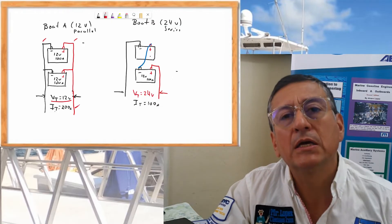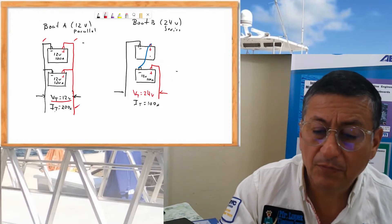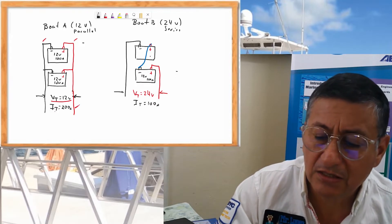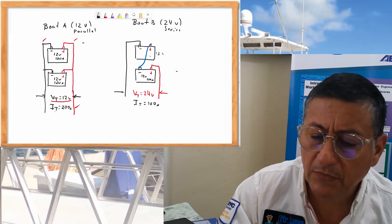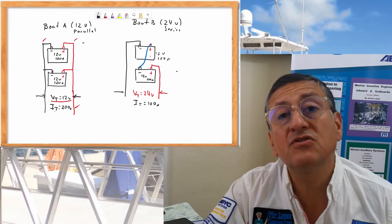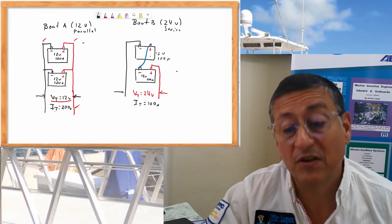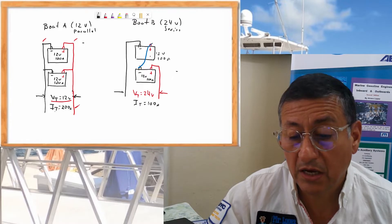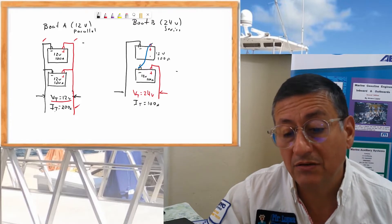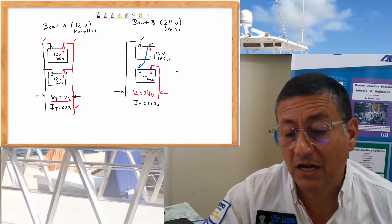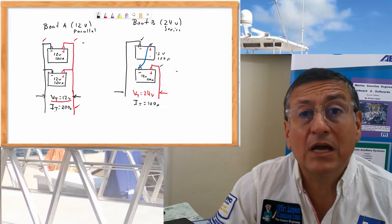Now we are going to check the series connection. Once again both batteries are exactly the same, 12V and 100 amps. And we are going to connect in series. The positive of the first one is connected with the negative of the second one. And this is the output negative of the series. And this is the output positive of the series.